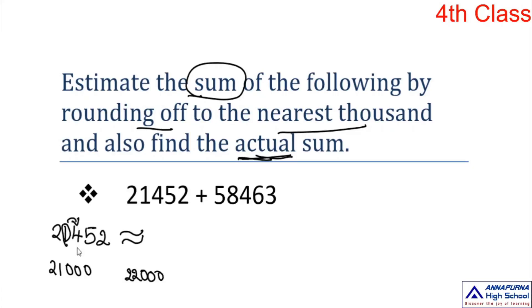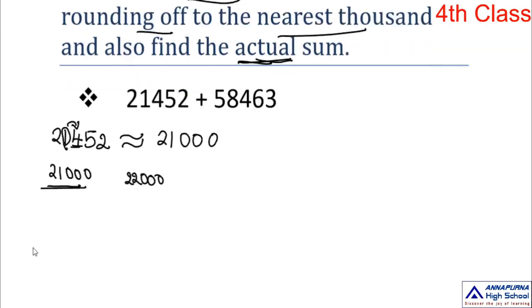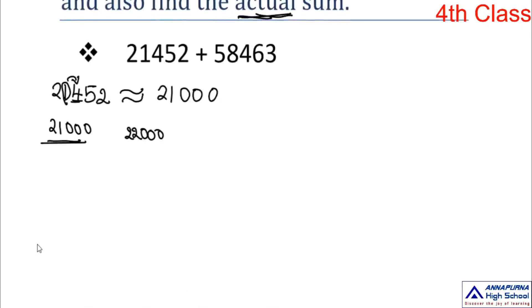The right-next digit to the thousands digit is 4, which belongs to the small number family. So 21,000 is the nearest thousand for 21,452.